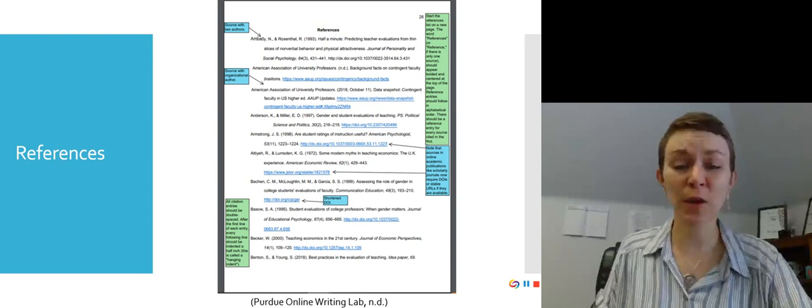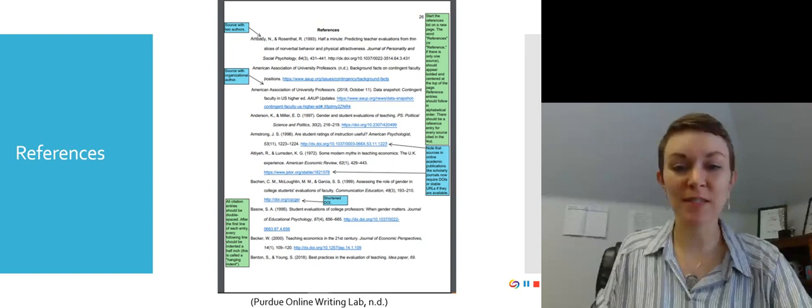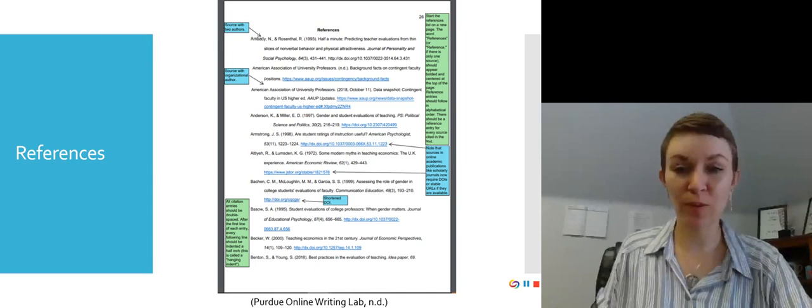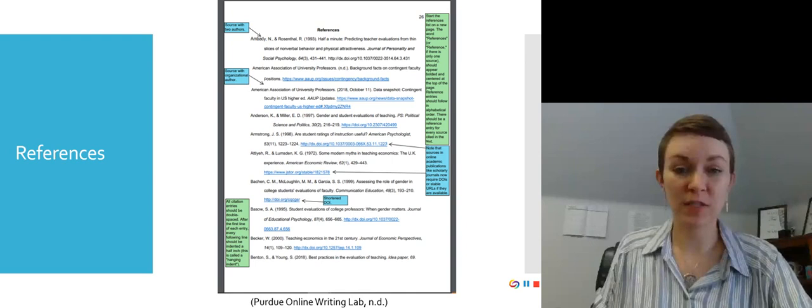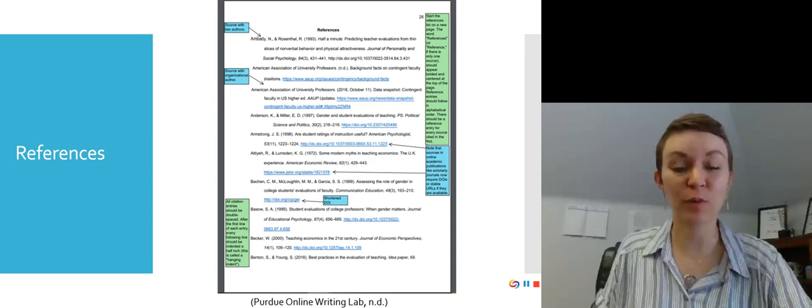Also note that this is in Times New Roman 12-point font. It's in alphabetical order. And references is bolded on top and centered. It's double-spaced all the way through. Make sure it's not quadruple-spaced between entries, but just double-spaced all the way through. And again, it's important to consult a reference guide for your specific source. And it will give you a template for how to enter the information for your specific source.